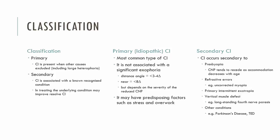In terms of classifying the patient, there are two types of convergence insufficiency: primary and secondary. Primary means that we cannot find an underlying reason for why the patient has CI. Secondary, on the other hand, means there is an underlying reason. Primary convergence insufficiency is the most common.